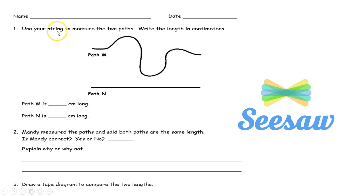Number one says use your string to measure the two paths. Write the length in centimeters. So you're going to use your string to measure both of these path M and path N. Then you're going to write how much path M is blank centimeters long. Then you're going to write path N is blank centimeters long.